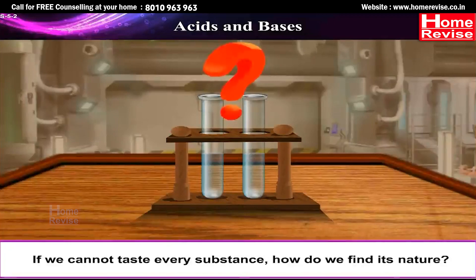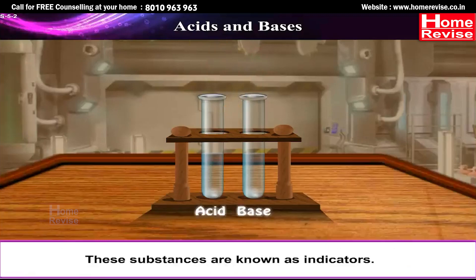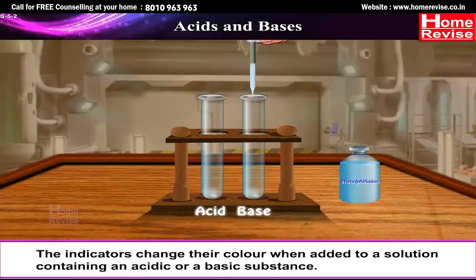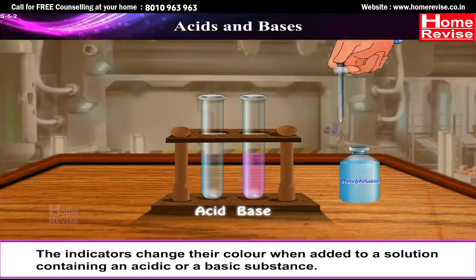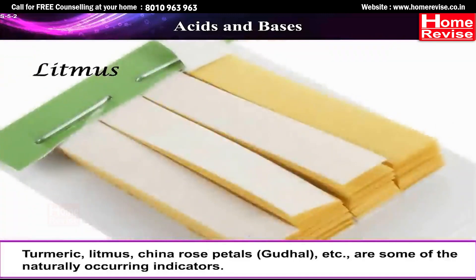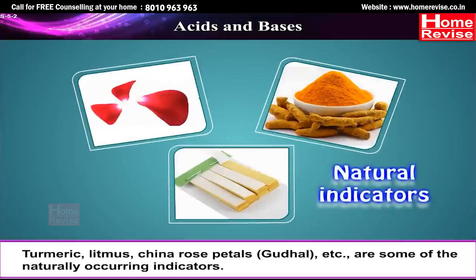If we cannot taste every substance, how do we find its nature? Special types of substances are used to test whether a substance is acidic or basic. These substances are known as indicators. Indicators change their color when added to a solution containing an acidic or a basic substance. Turmeric, litmus, china rose petals (gudhal) etc. are some of the naturally occurring indicators.